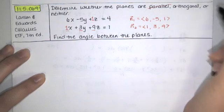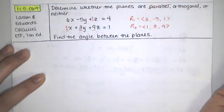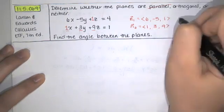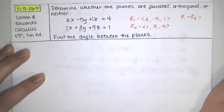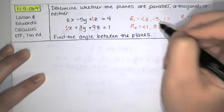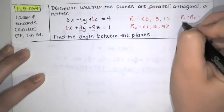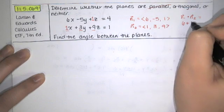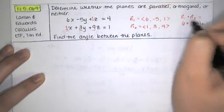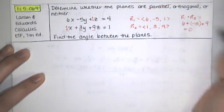Now we can tell if the planes are orthogonal by computing the dot product of the two normal vectors. If the dot product of the normal vectors is 0, it turns out that means the angle between the two planes is 90 degrees. So we'll take 6 times 1, which is 6, and then we'll add negative 5 times 3, which is negative 15, and we'll add 1 times 9. We actually do get 0.